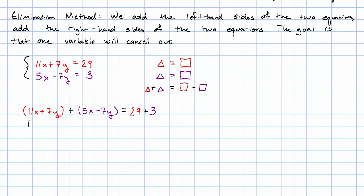11x plus 5x is 16x. 7y plus negative 7y is 0y. And 29 plus 3 is 32. So, 16x is 32. Dividing both sides by 16, x is 2.